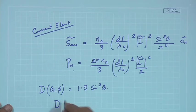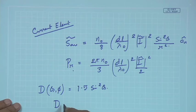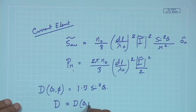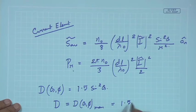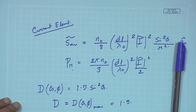Maximum directivity is generally what is referred to simply as directivity — it is the maximum value of D(θ, φ). In this case the maximum value is 1.5. The current element focuses power in the broadside direction — it is 1.5 times the omni and occurs at θ = π/2.